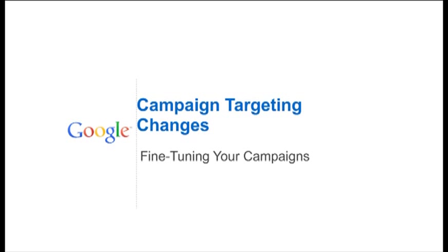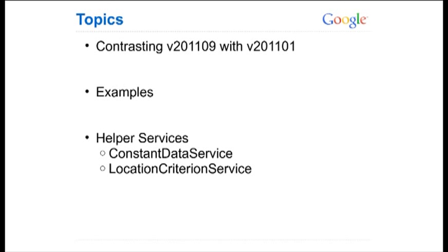My name is Aaron Karp, and I'll be walking you through changes that we're making to campaign targeting in v201109. First I'm going to talk about the difference between v201109 and v201101, show you examples of what it looks like in the old version and the new version, and then discuss a couple of helper services that we're releasing. Many of the geo targets, for example, are now available by API service as well.